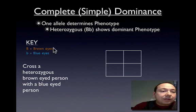Let's say we have this example here and we're going to look at eye color. Big B is going to equal brown eyes, little b is going to equal blue eyes because brown eyes is dominant over blue.